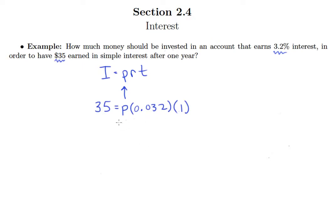Alright so of course 1 times 0.032 is just 0.032. I'm going to put the 0.032 first, the P second, just because it's convention to put the coefficient first. And I'll go ahead and divide both sides by 0.032.